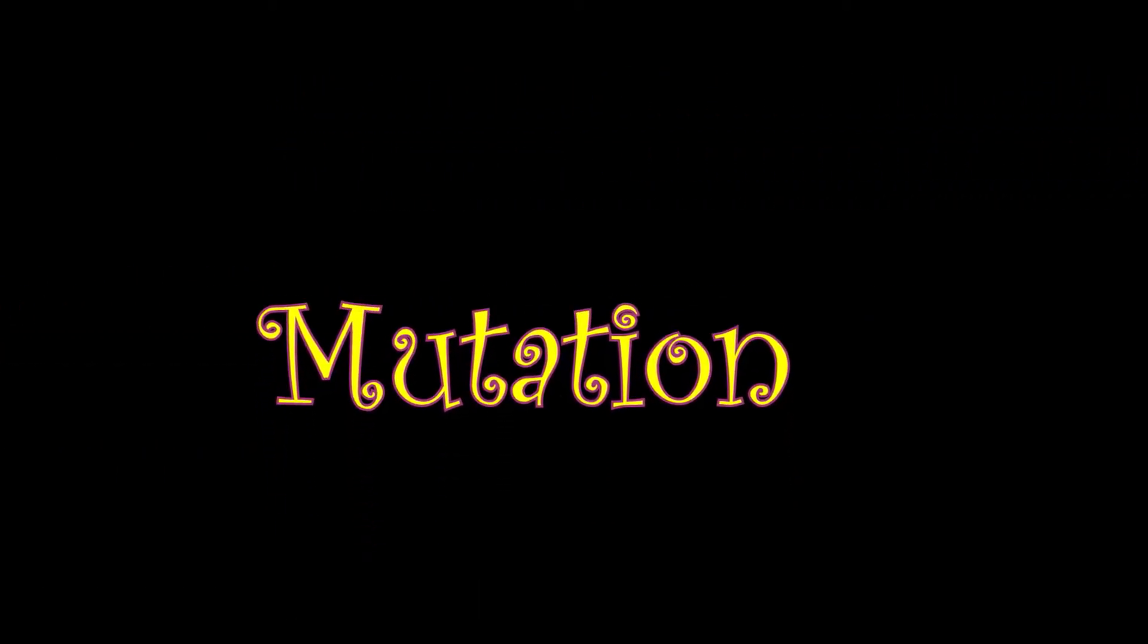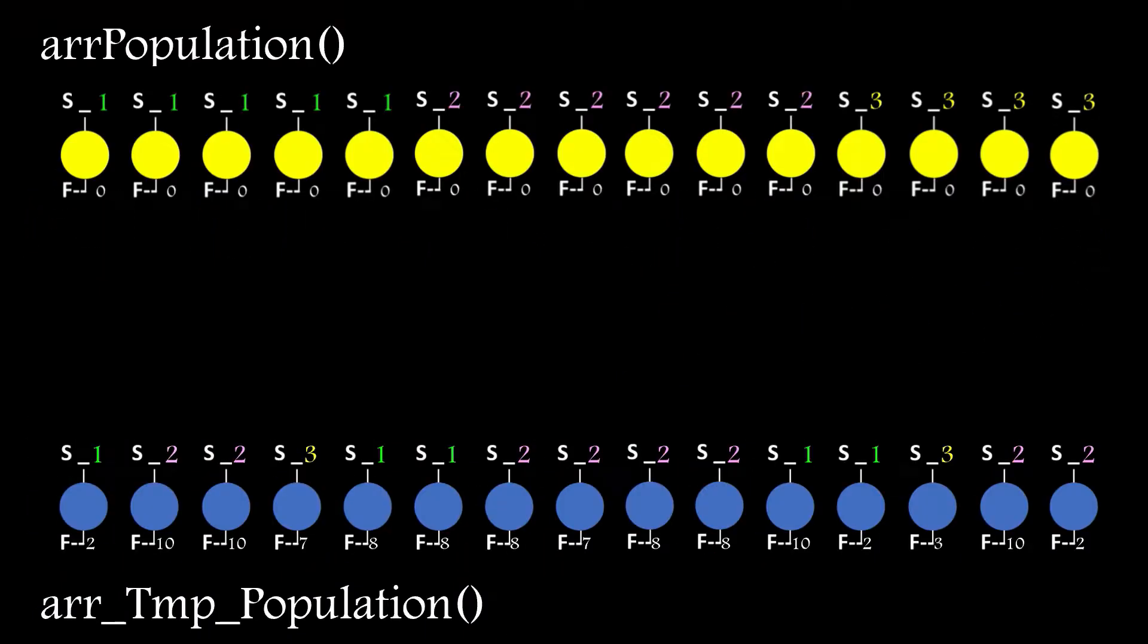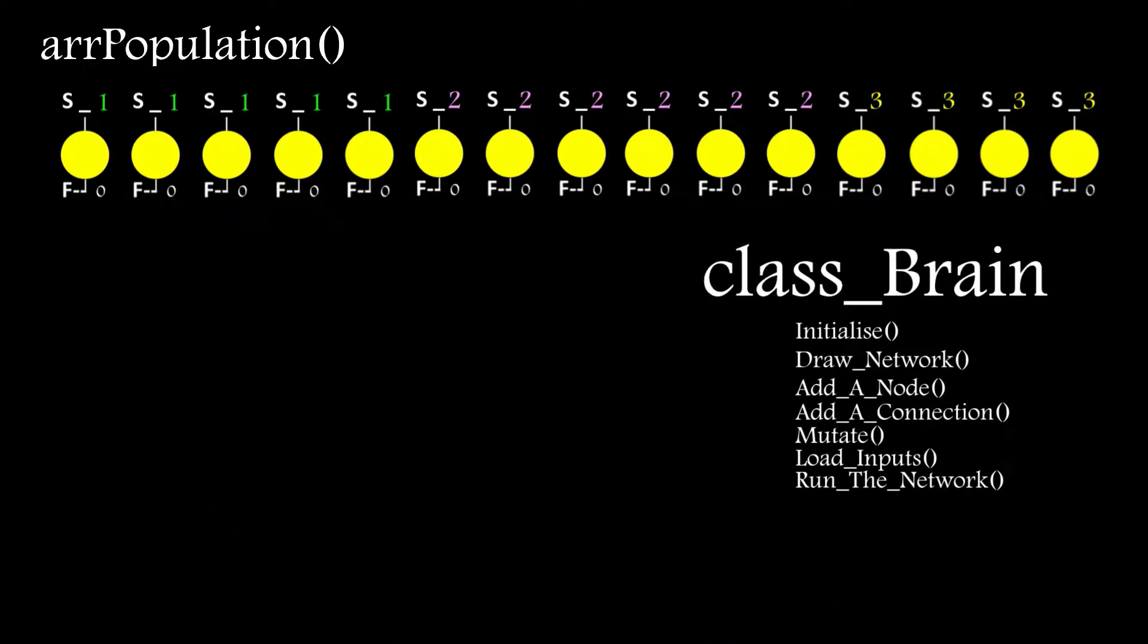So let's now focus on mutation and finish this off. And this is the easy part, sort of. Once crossover is complete, I take each member of the population in turn and mutate the weights, and also the topology by adding a node or connection, and the chance of that occurring is defined at the start.